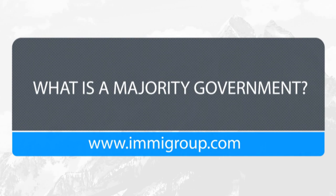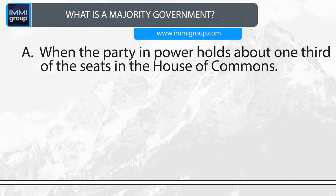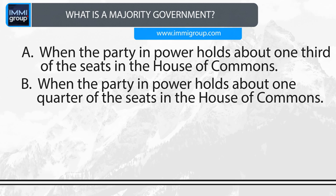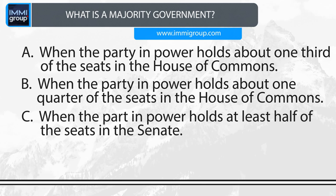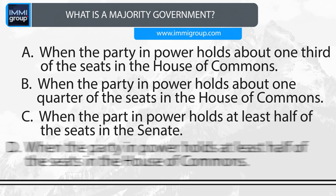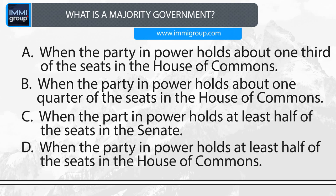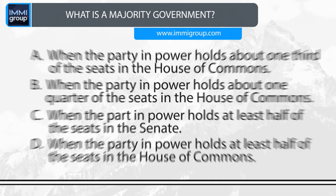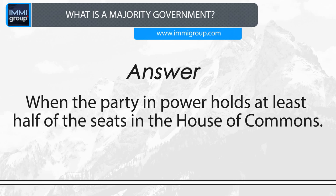What is a majority government? A. When the party in power holds about one-third of the seats in the House of Commons. B. When the party in power holds about one-quarter of the seats in the House of Commons. C. When the party in power holds at least half of the seats in the Senate. D. When the party in power holds at least half of the seats in the House of Commons. Answer: When the party in power holds at least half of the seats in the House of Commons.